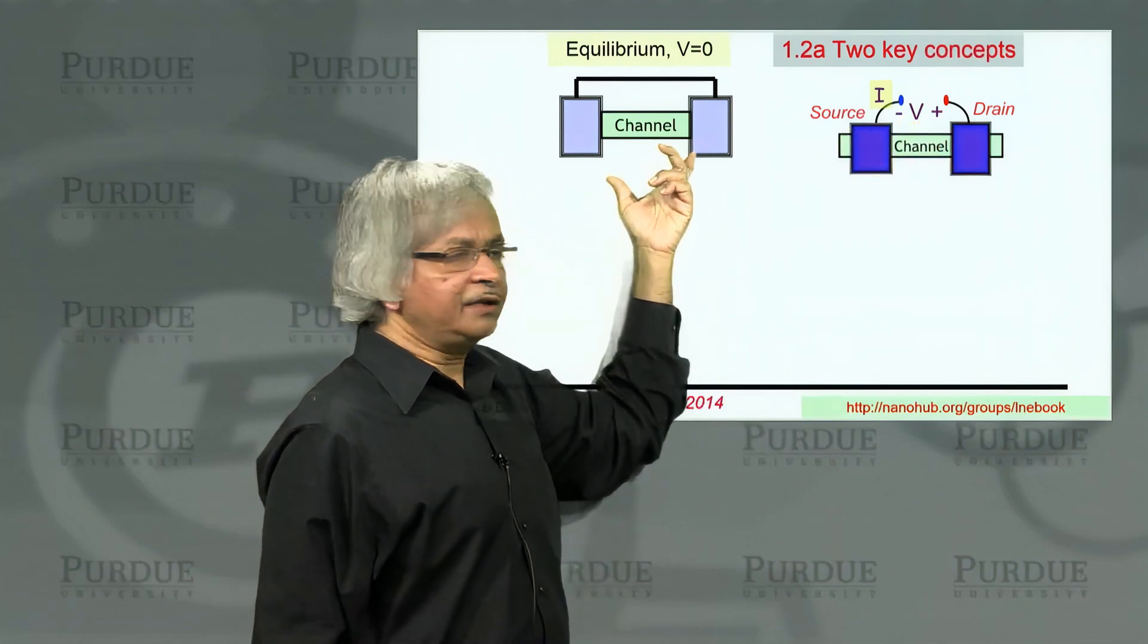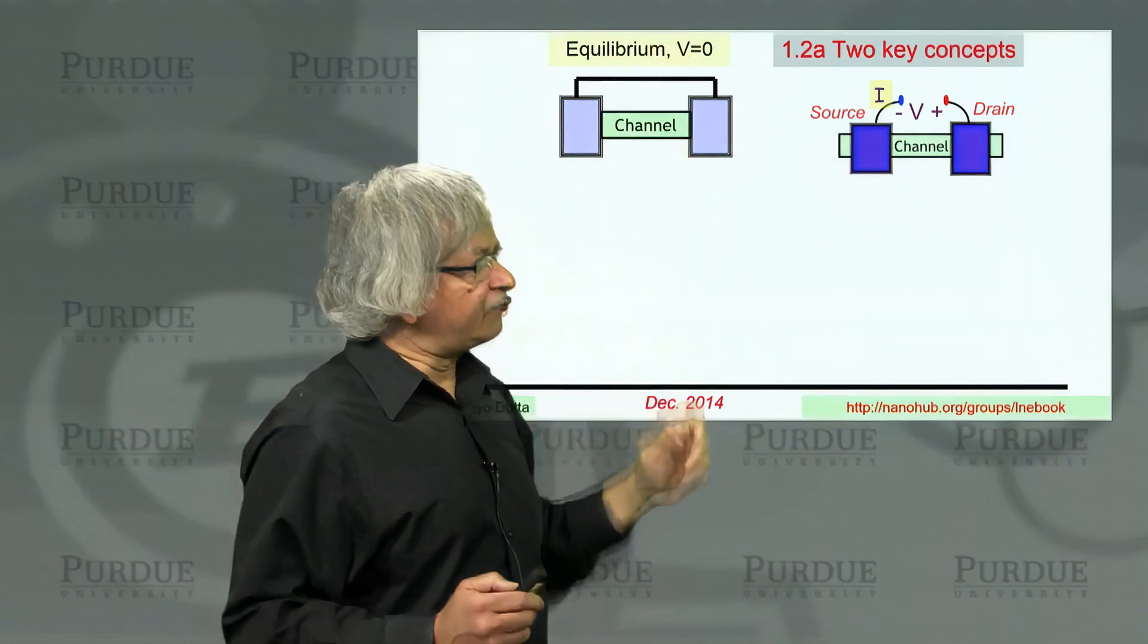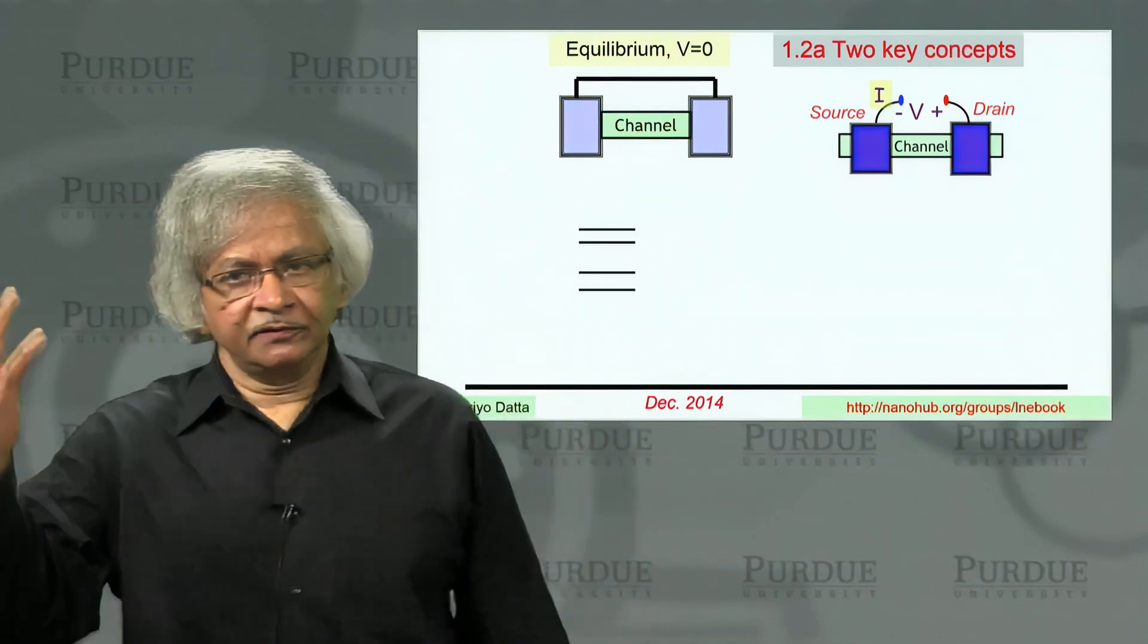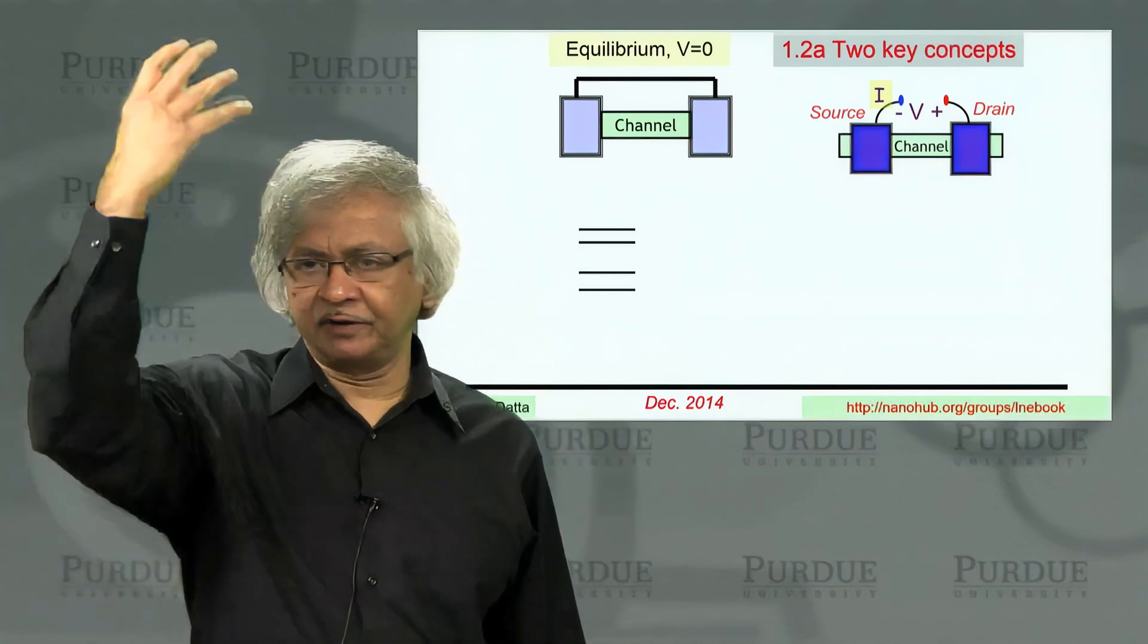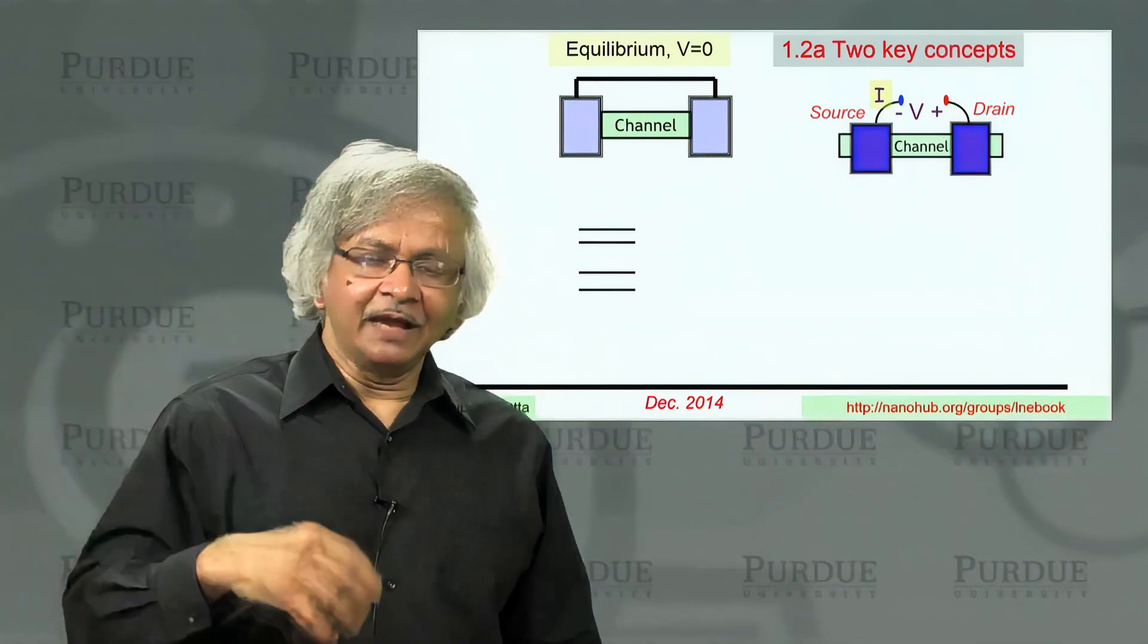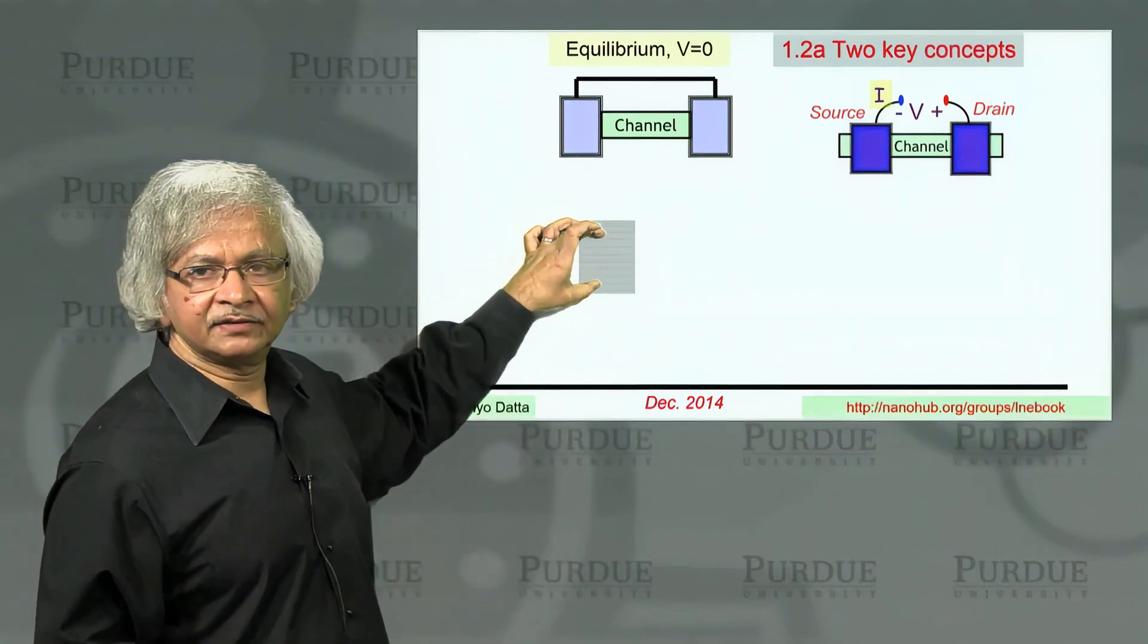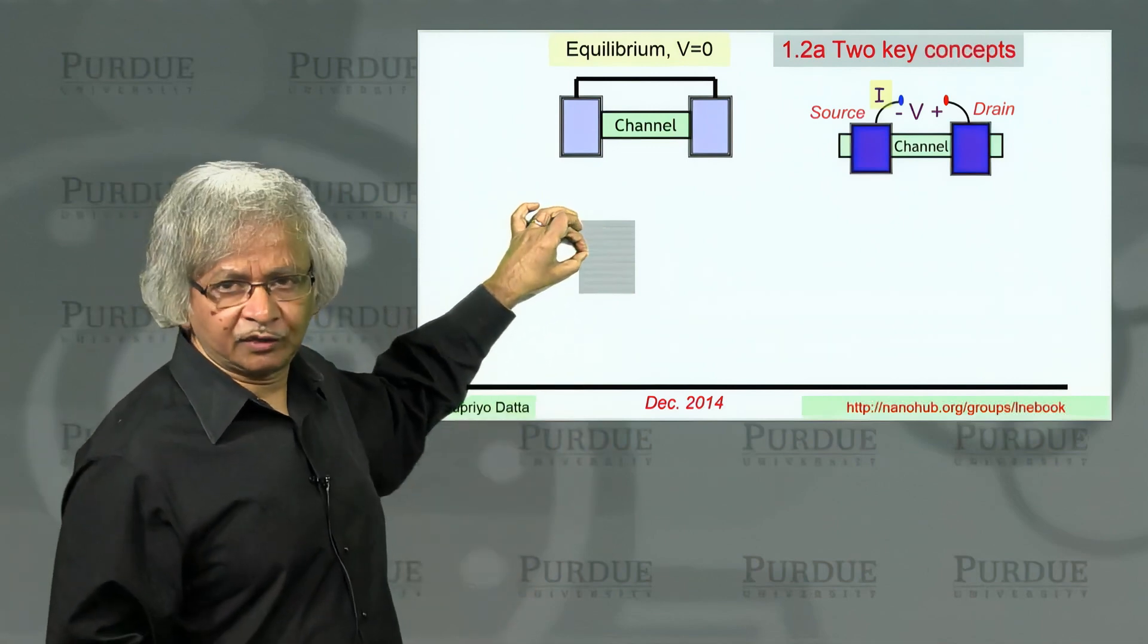Let's first start with the equilibrium case where there is no voltage applied. The first question is what are the energy levels available in the channel? If you had a hydrogen atom, you'd have discrete levels separated by quite a bit, like 5 or 10 electron volts. As you get to bigger things, the energy levels come together and are more dense. When you get to a solid, these levels are awfully close together.